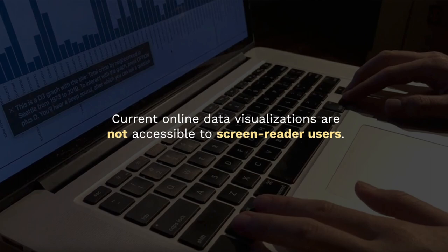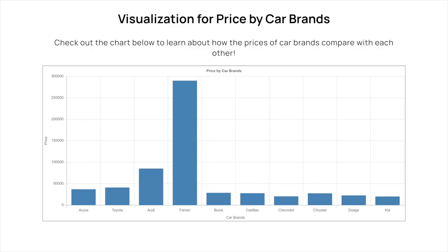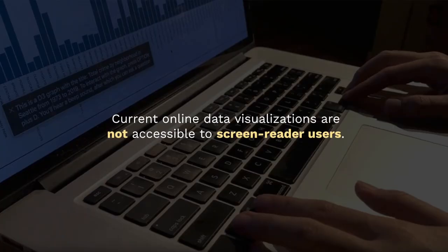Let's take a look at the current state of the accessibility of online visualizations. [Screen reader]: Visualization for price by car brands, heading level one. Check out the chart below to learn about how the prices of car brands compare with each other. Unlabeled graphic, clickable. As we saw, screen reader users are unable to extract any information from this visualization, which was identified as unlabeled graphic.